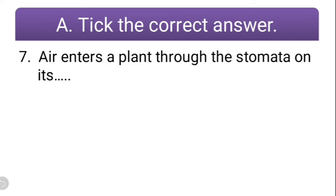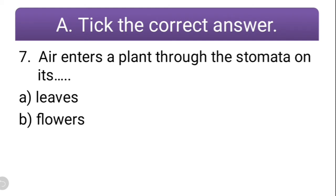Question number seven: air enters the plant through the stomata on — what is the correct option? Leaves. Because stomata are on the leaves, and with the help of stomata, air enters the plant.